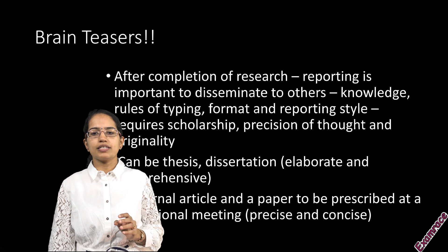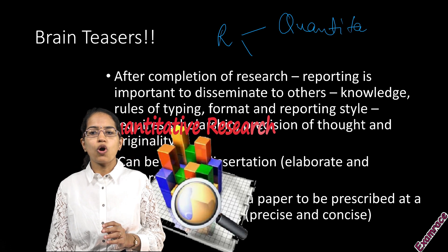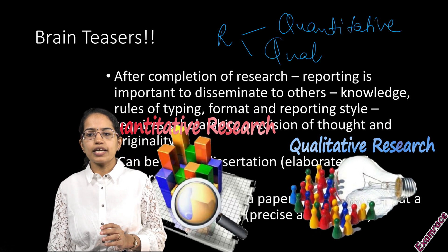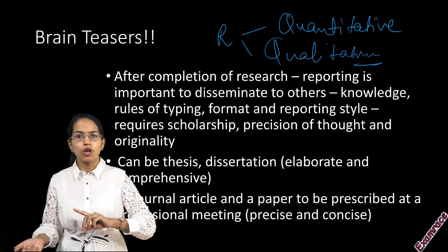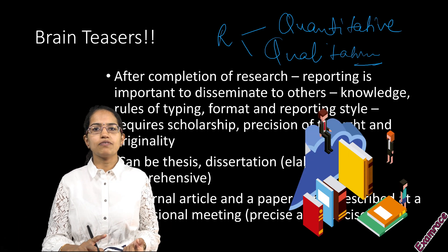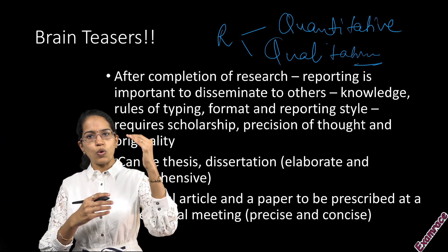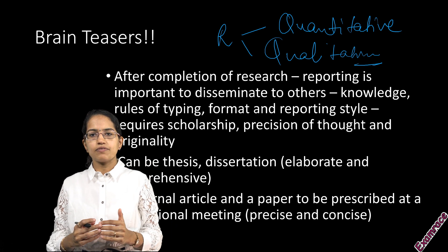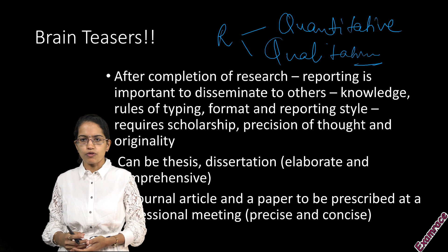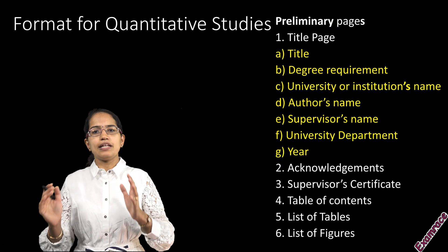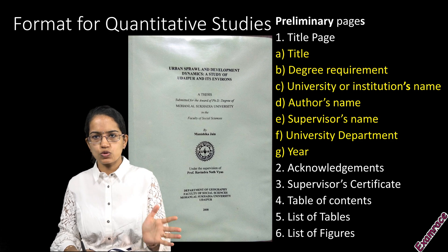A very important thing to note is what kind of research it is — whether it's quantitative research or qualitative research. Your organization of information and methodology would differ based on whether it's quantitative or qualitative research. We will focus on these one by one. We will first take quantitative research, then qualitative research, and then for a journal article or paper presentation. First of all, we talk about the preliminary pages. This preliminary information would remain the same for quantitative as well as qualitative studies.